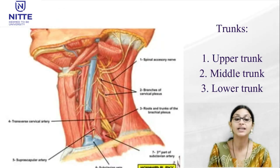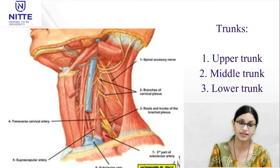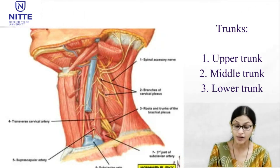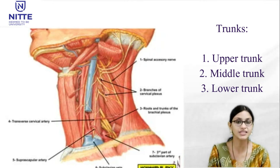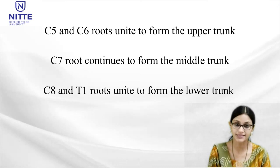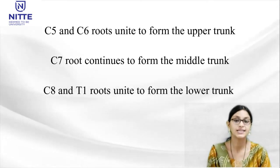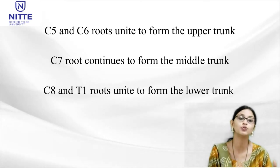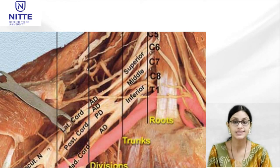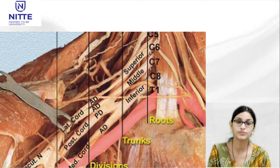Coming to the trunks: trunks are 3 in number — upper, middle and lower trunk. These trunks appear in the posterior triangle of the neck. C5 and C6 unite together to form the upper trunk. C7 root continues to form the middle trunk. C8 and T1 unite together to form the lower trunk of brachial plexus.